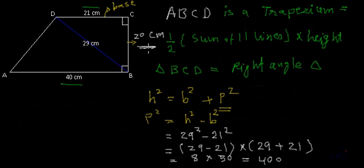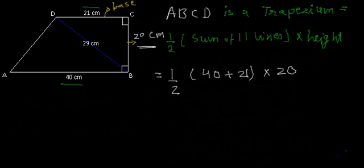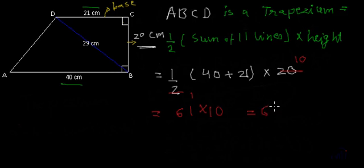So 20 cm is the height of the trapezium. Now substituting the values: Area = 1/2 × (40 + 21) × 20 = 1/2 × 61 × 20 = 61 × 10 = 610 cm². So this is the area of the trapezium.